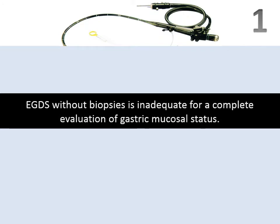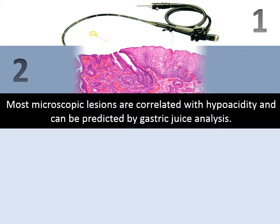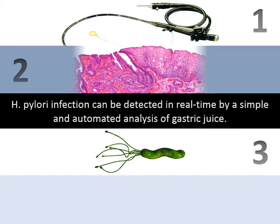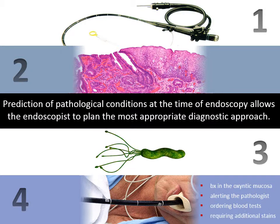Conclusions. EGDS alone is inadequate for a complete evaluation of the gastric mucosal status. Most microscopic lesions are correlated with hypoacidity and can be predicted by gastric juice analysis. H. pylori infection can be predicted in real-time by a simple and automated analysis of gastric juice. Prediction of pathological conditions at the time of endoscopy allows the endoscopist to plan the most appropriate diagnostic approach for each patient, such as taking biopsies from the oxyntic mucosa, alerting the pathologist, ordering specific blood tests, or requiring additional stains.